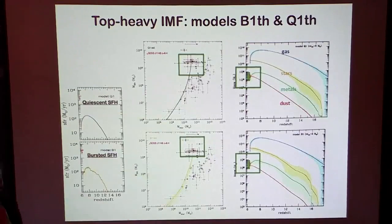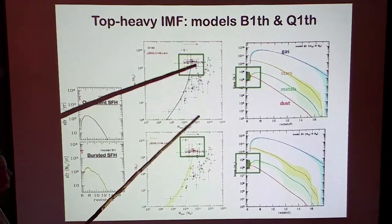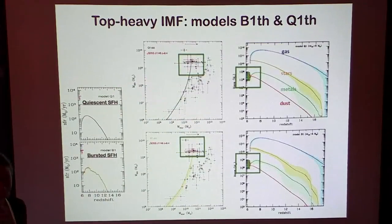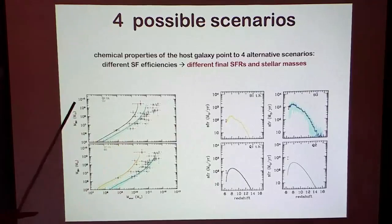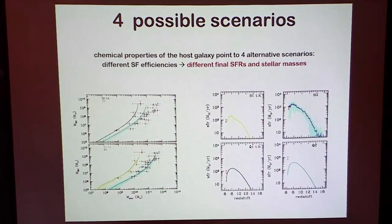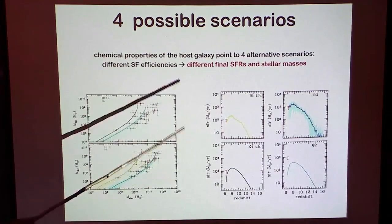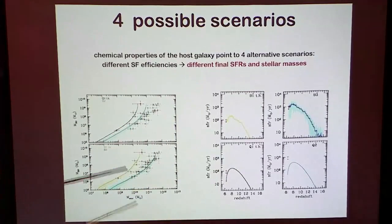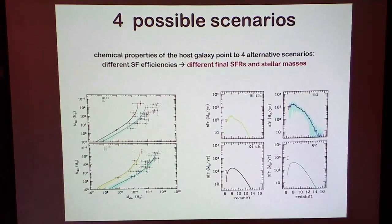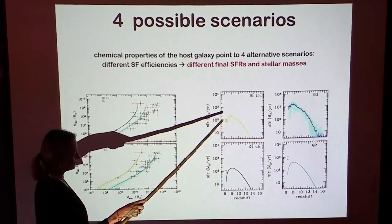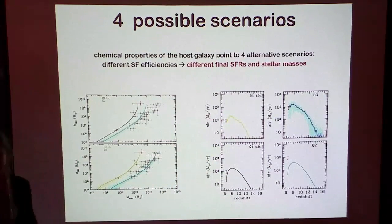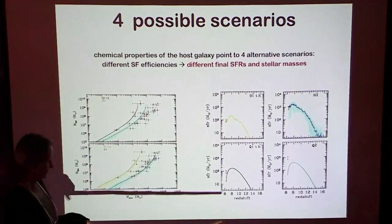To summarize: at the end of this large parameter study, we found four possible scenarios that were able to account for the chemical properties. Two of them were exceeding the dynamical mass constraints. Most importantly, they were predicting very different star formation histories and very different star formation rates at the final redshift of 6.4.